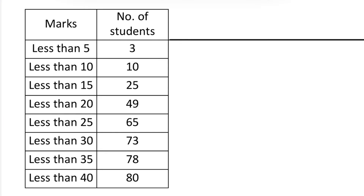The data says: the number of students who scored less than 5 marks are 3; the number of students who scored less than 10 marks is 10; the number who scored less than 15 marks is 25; and so on, until the number of students who scored less than 40 marks covers all students, with a total of 80 students.